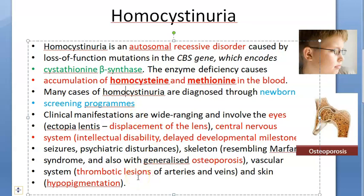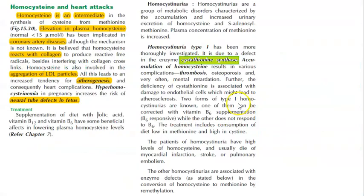These people can have coronary artery disease and heart attacks. If a mother has hyper-homocysteinemia during pregnancy, the baby can have a neural tube defect.